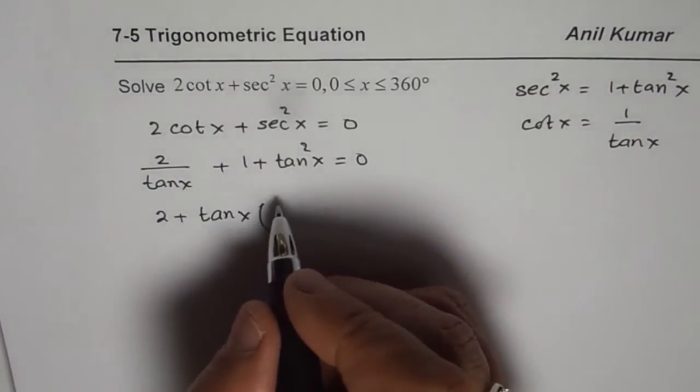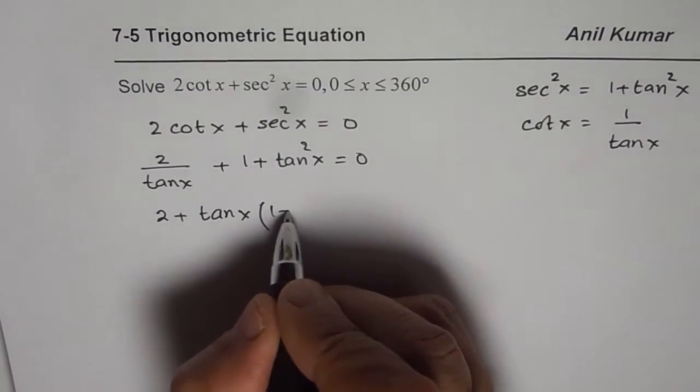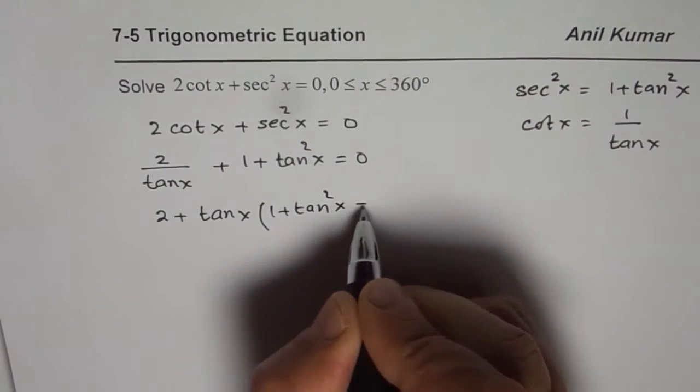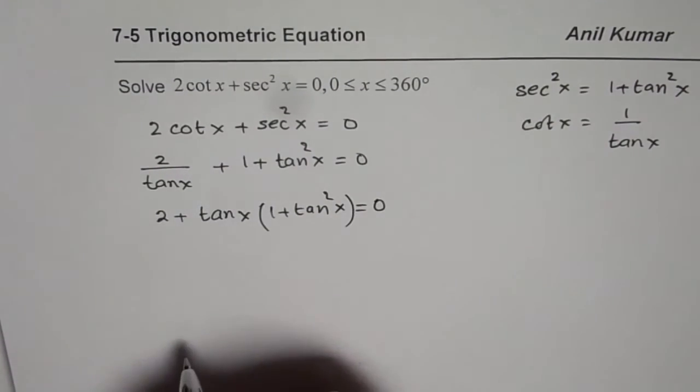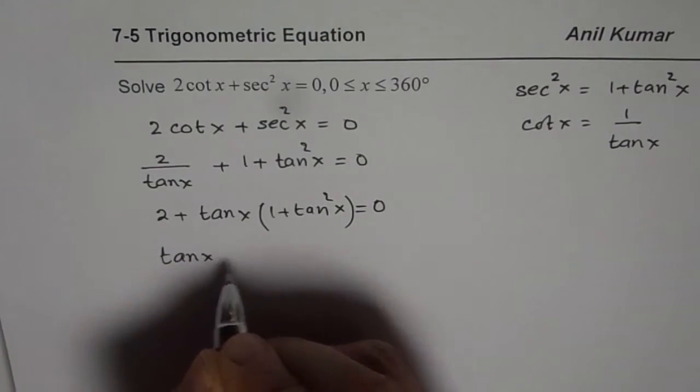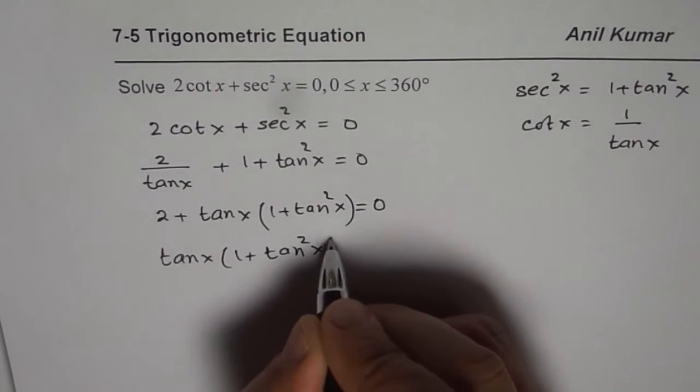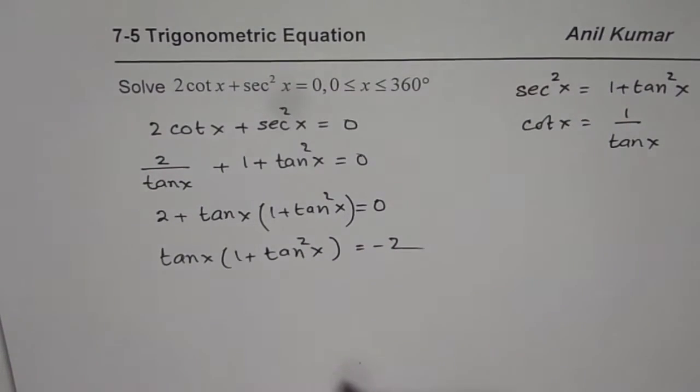Then we get 2 plus tan x, or we could rearrange it. Either way you can say 2 plus tan x, 1 plus tan square x equals to 0. So we can rearrange and we can write this as tan x times 1 plus tan square x equals to minus 2.